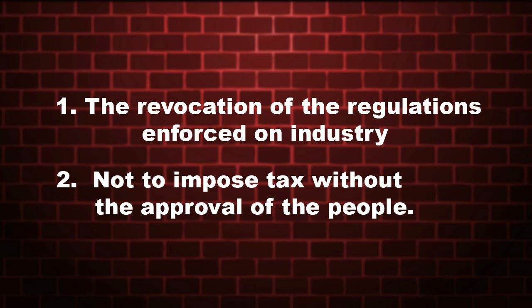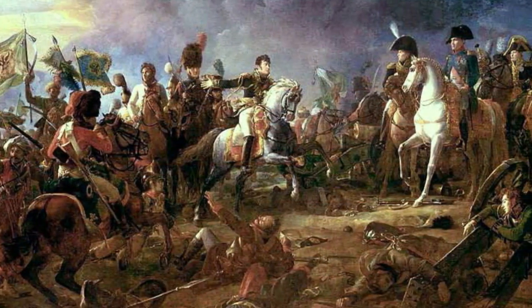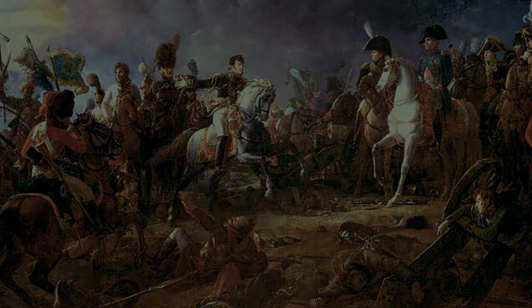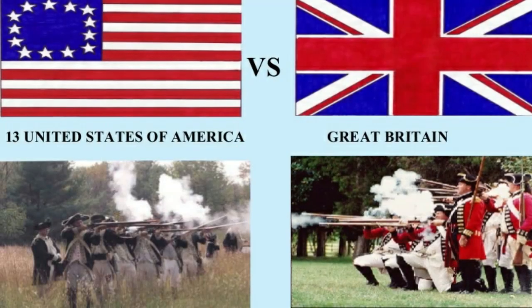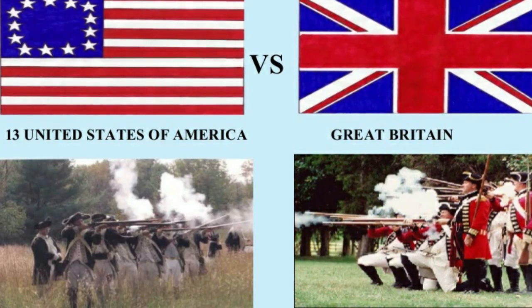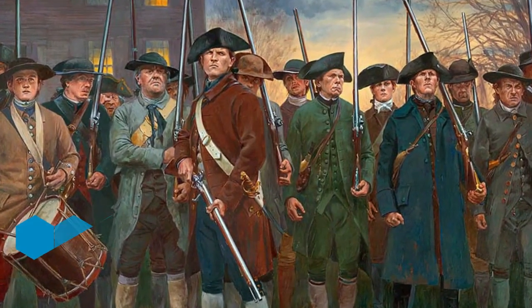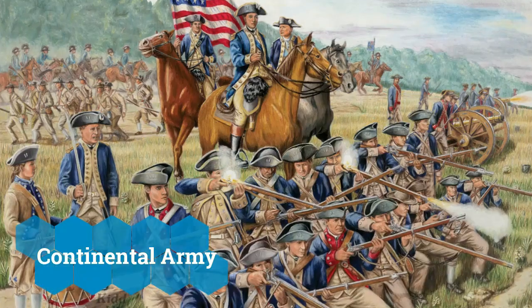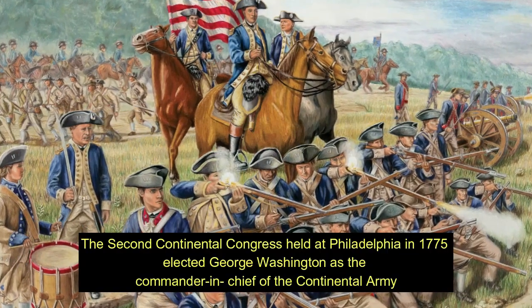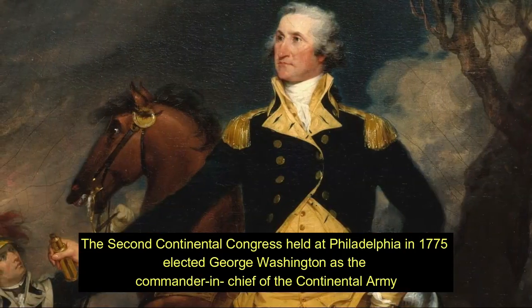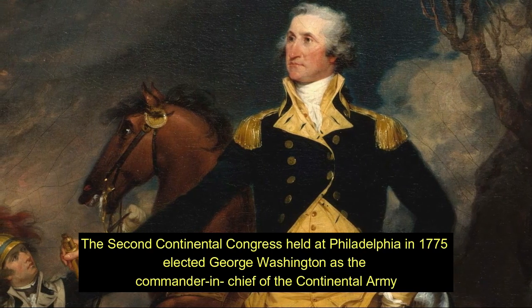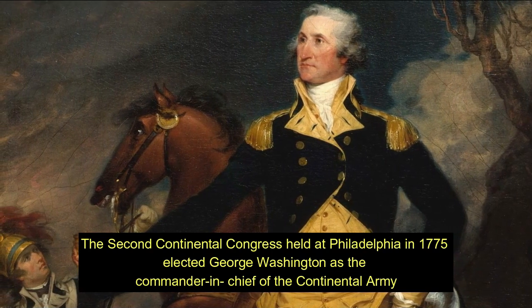The second demand was not to impose tax without the approval of the people. But the king sent a military force to suppress the people, and this led to war between England and the colonies. The American colonies also formed their own army known as the Continental Army. The Second Continental Congress, held at Philadelphia in 1775, elected George Washington as the Commander-in-Chief of the Continental Army.